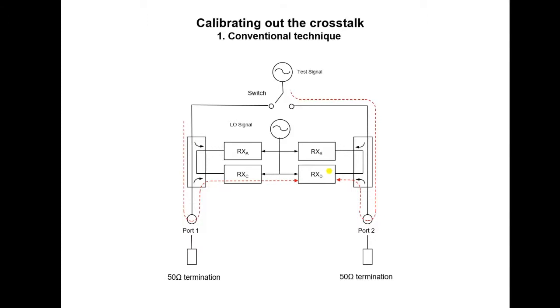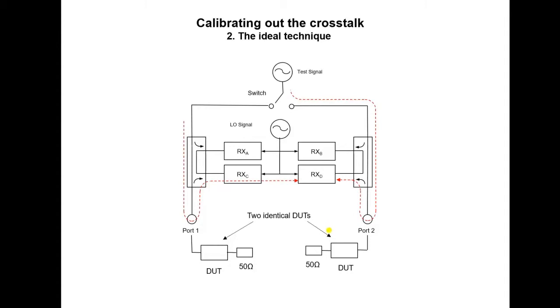Let's look at another approach. Here, we have what we can refer to as the ideal technique. What we do here is to use the actual device to be tested as the termination for ports 1 and 2 during the crosstalk calibration step. This works very well, but the disadvantage is that you need two identical devices which can be quite difficult to achieve. Not impossible, but it is difficult.